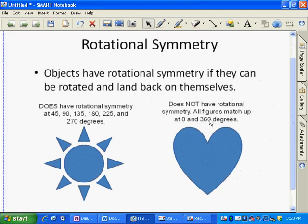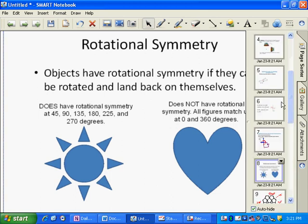So we've talked about different translations. And then in the past we've talked about line symmetry, where you could fold an object on the line and it would match back on itself. Well, rotational symmetry is where you would rotate an object and it lands on itself evenly. So different objects have different rotational symmetry.